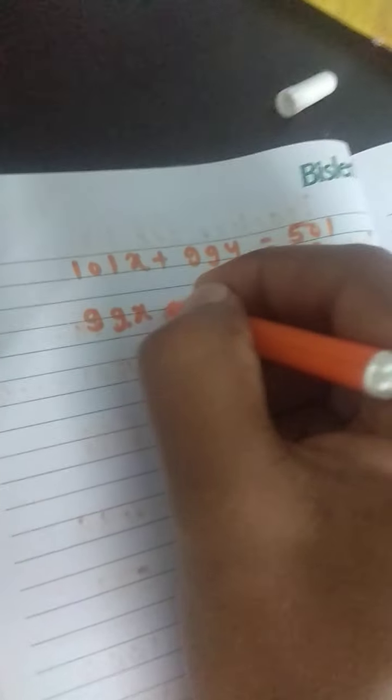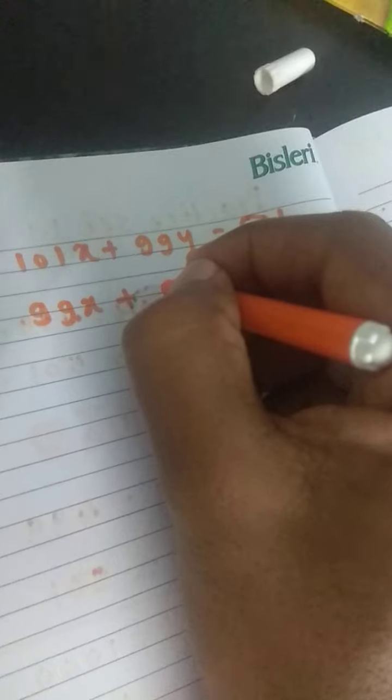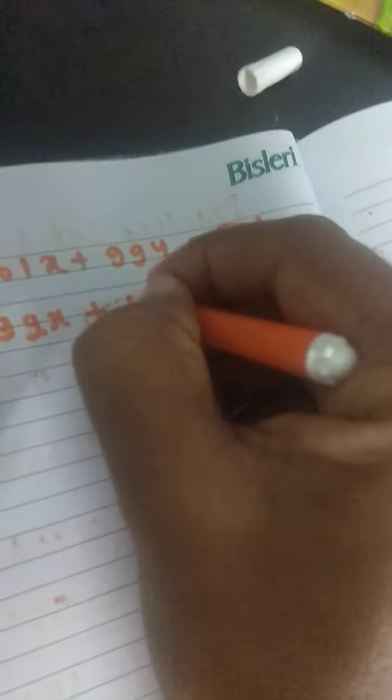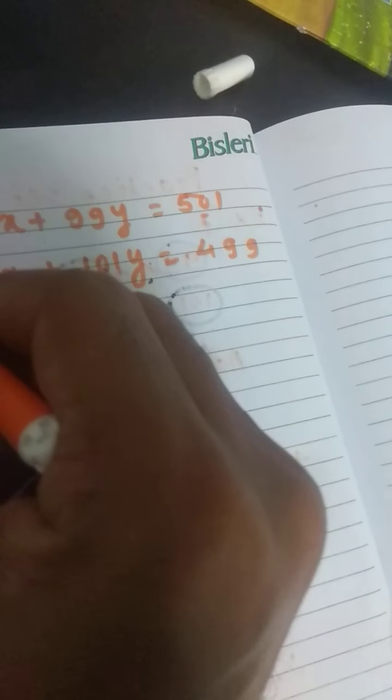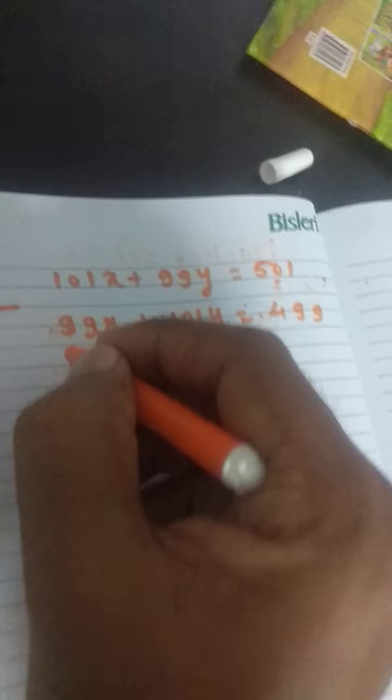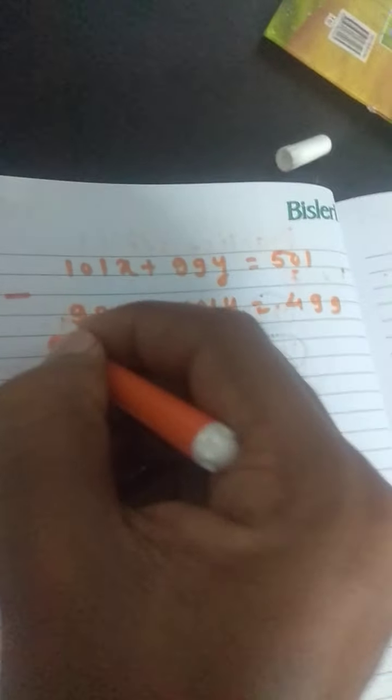Minus Equation 1: 99x plus 101y equals 499.